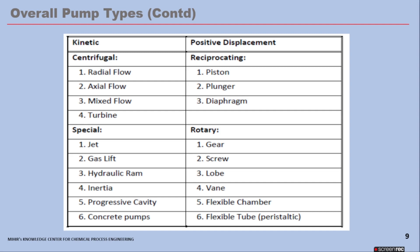Looking at the overall pump types again: on the left-hand side you have the kinetic pumps, which are centrifugal, and then the positive displacement or reciprocating type, which includes piston, plunger, and diaphragm. The rotary types include gear, screw, lobe, vane, flexible chamber, flexible, and peristaltic. Under the special category you also have the progressive cavity pump, which can also be classified in the rotary category — it is a special type of pump. The specification of process pumps involves a step-by-step approach, and the process engineer must select a pump with the best efficiency for the full range of process operating conditions.